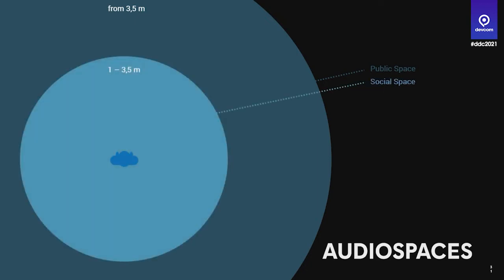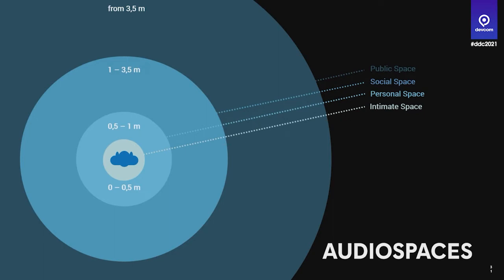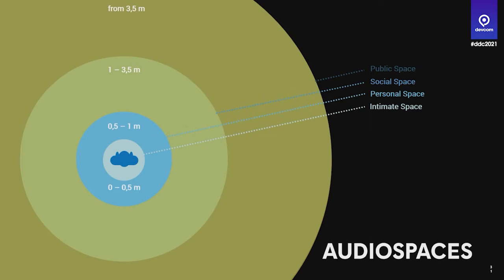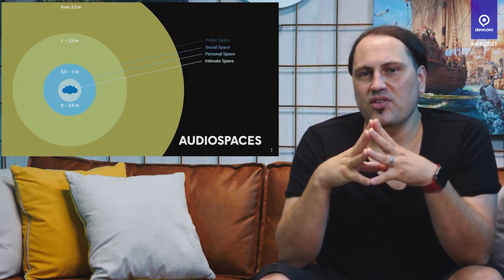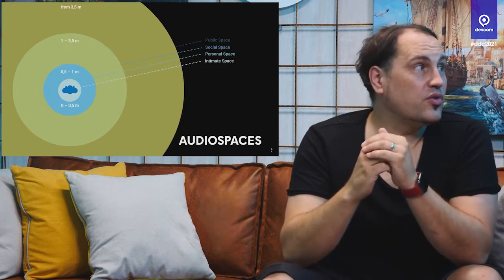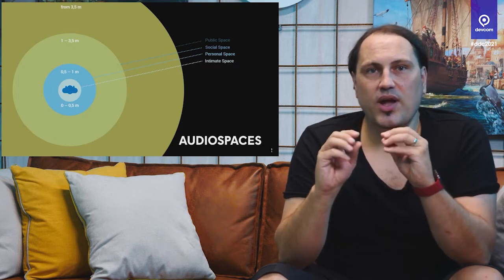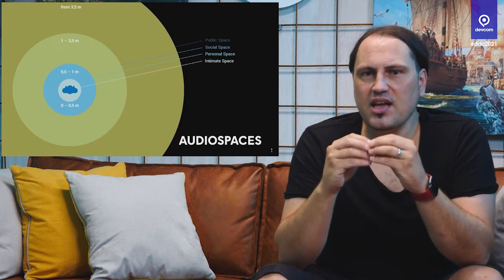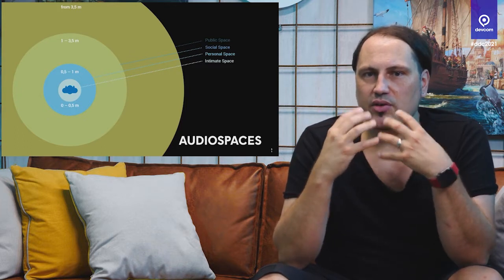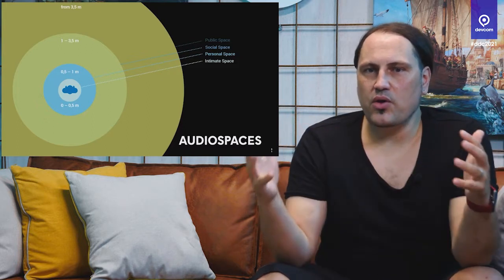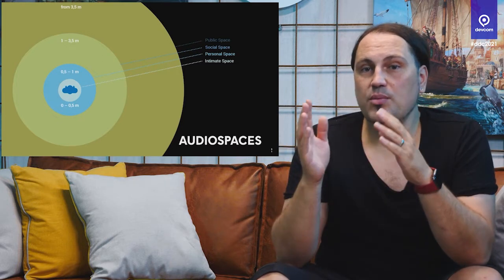We have the public space, the social space, the personal space, and the intimate space. In regular games, you normally use the public and social space. Sometimes in first-person games you access the personal space as well. But in most games you don't enter the intimate space. This is a mental model for the team to understand that we need to think about very close interactions, because sounds behave very differently depending on distance.